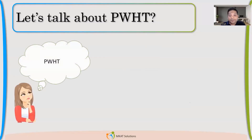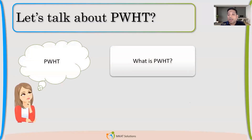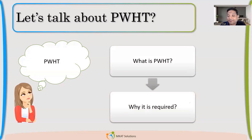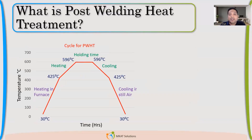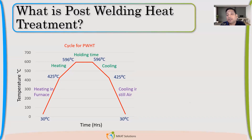PWHT is what we are going to focus on. So, what is post-weld heat treatment and why is it required? Post-weld heat treatment is a heat treatment cycle. We are trying to heat below the recrystallization temperature. There are two recrystallization temperatures — we call them critical temperatures: the first critical temperature and the second critical temperature.